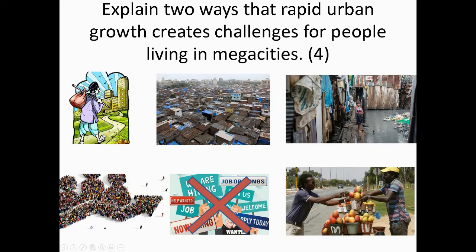Your first point is about rural to urban migration increasing the population in your city. This can lead to housing shortages. Rural to urban migration leading to housing shortages is your first challenge. You then need to explain why that would be a challenge — this is a challenge as slums have poor living conditions, leading to diseases such as cholera. The second point is that an increase in population can lead to job shortages in the formal sector. This means people are more likely to have to work in informal employment, which has poor working conditions and a lack of guaranteed income.